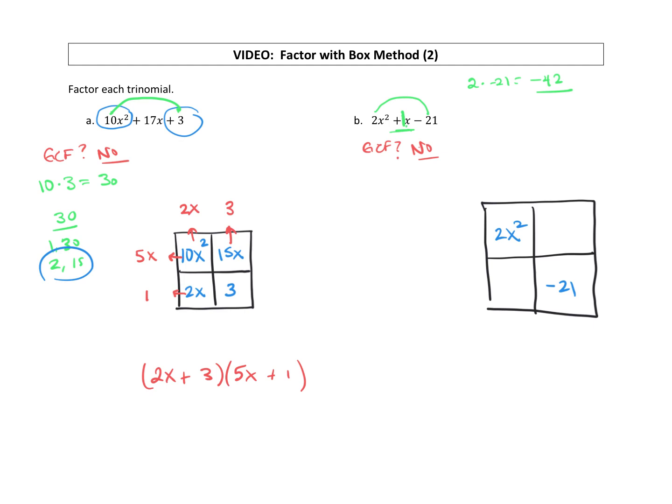So factors of negative 42 that add up to 1. If you think through your factors, we'll get to 6 and 7 as a factor pair. And if we make that 6 negative, negative 6 plus 7 adds up to a positive 1. So that's the factor pair we want, a negative 6 and a positive 7. So I'm going to put a negative 6x in one and a positive 7x in the other.